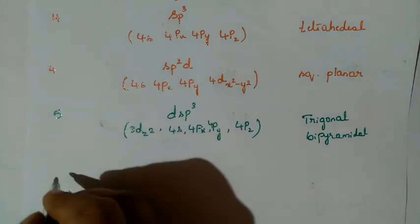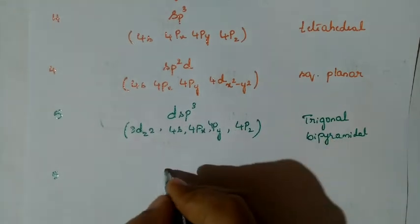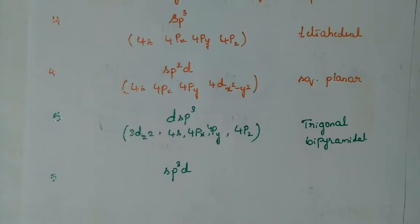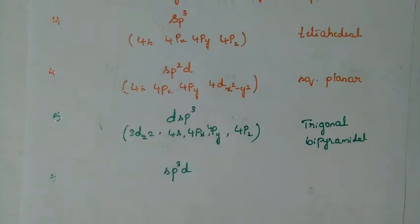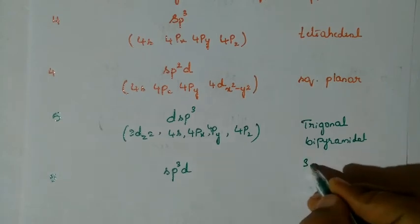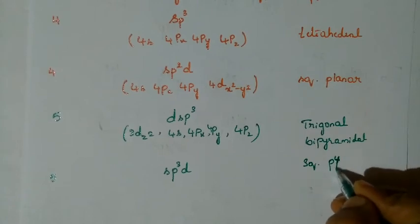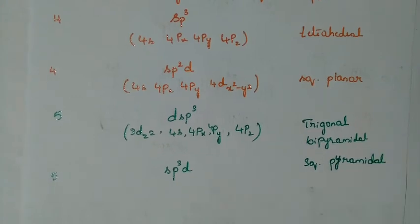For coordination number 5, another possibility is SP3D hybridization. The orbitals are almost the same, but here it becomes 4D x²−y². The geometry is square pyramidal.